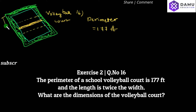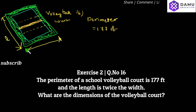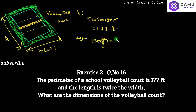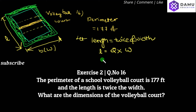So let's set up variables. This is the length of the volleyball court and this is the breadth, that is the width. Length will be equal to twice the width, so L will be equal to 2 times W.